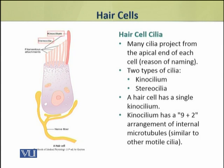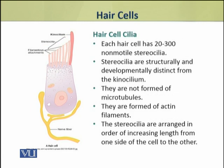There is a single kinocilium in each hair cell. This kinocilium has a typical motile cilia-like structure that contains a nine-plus-two arrangement of microtubules. The hair cells also have many stereocilia; the number of stereocilia may vary from 200 to 300 in each hair cell.